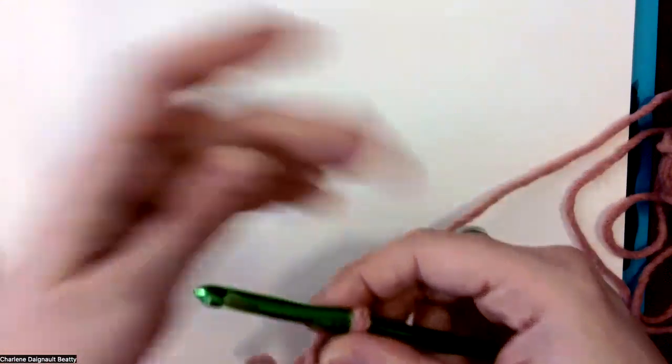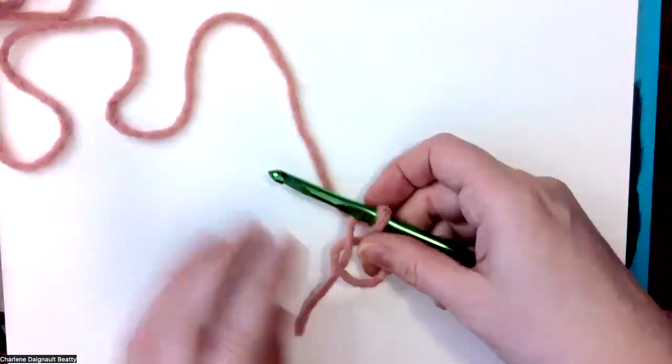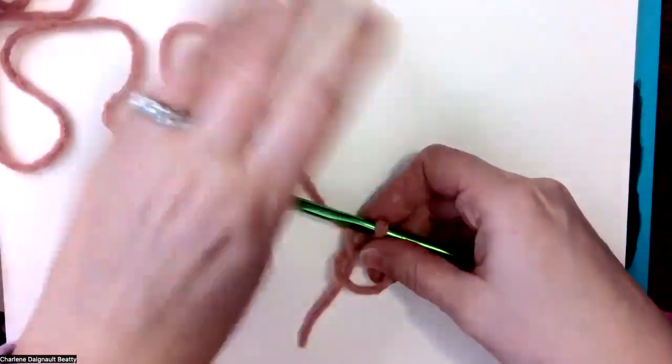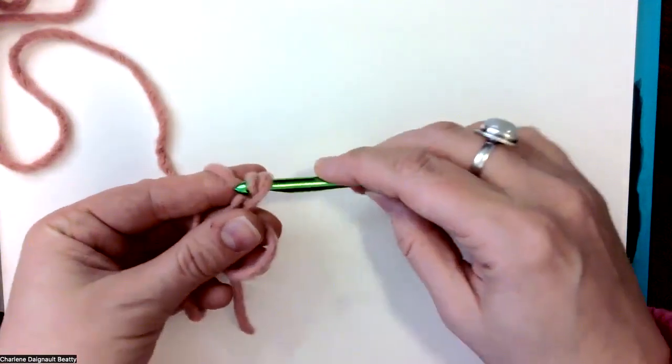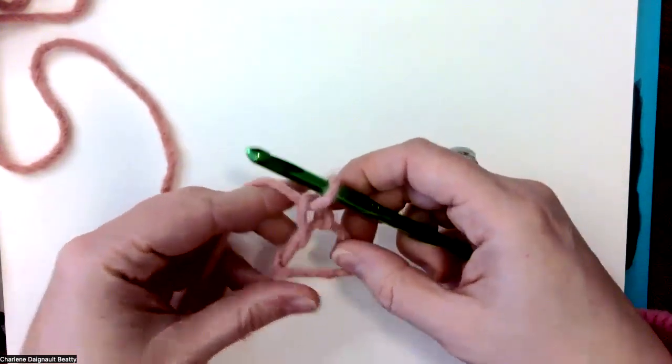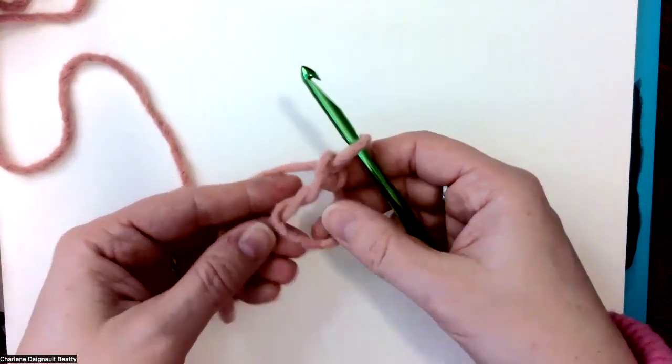Now you want to have your tail here. The tail is going to be an important part. You can move your ball of yarn over here. Your tail's here, your working yarn or your ball of yarn's here. You're going to yarn over, pull it through, so this is our first chain. This is how we have a magic ring.